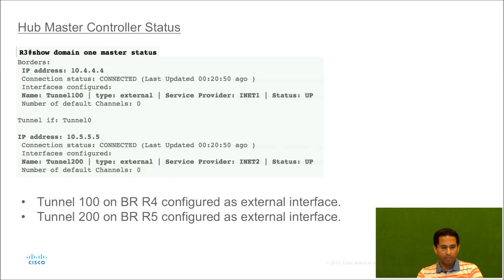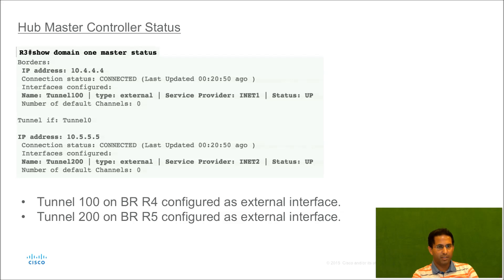As shown in this output, tunnel 100 on the border router R4 is manually configured as an external interface because the external interfaces on the master controller router on the hub side are still configured manually. The smart probes are only used to discover the external interfaces on the spoke side. R3 being the hub master controller is configured to use tunnel 100 on R4 as the external interface and tunnel 200 on R5 as the second external interface.